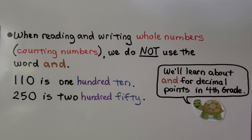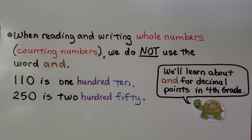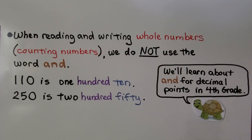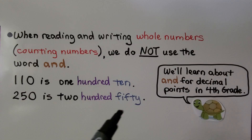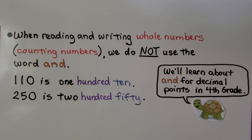When reading and writing whole numbers — those are counting numbers — we do not use the word 'and.' One hundred ten is 'one hundred ten.' Two hundred fifty is 'two hundred fifty.' We don't use the word 'and' between the words here. We'll learn about 'and' for decimal points in fourth grade math, so don't use 'and' when you read or write whole numbers.